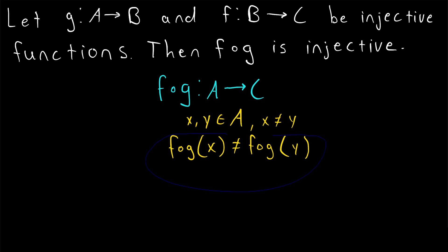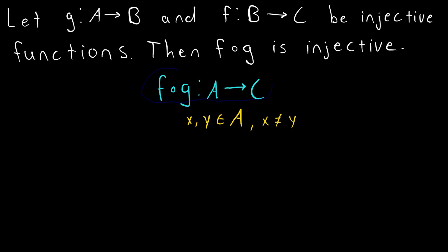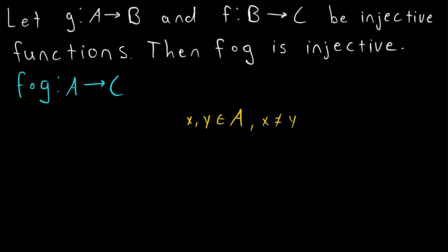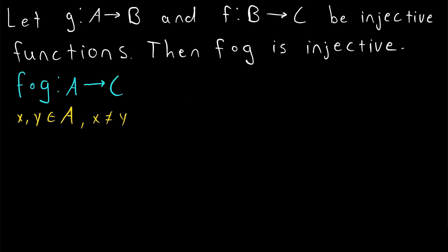Proving this is very straightforward — we basically just have to apply the definition of injective a few times. Now let's get into the proof. Consider the composition function F of G that maps elements from A to elements of C. Then consider two distinct elements X and Y from the domain A, where X is not equal to Y.